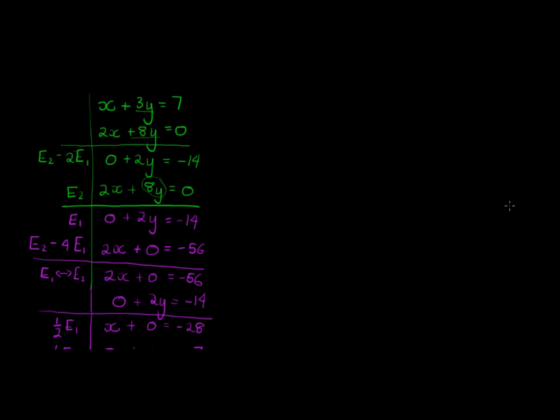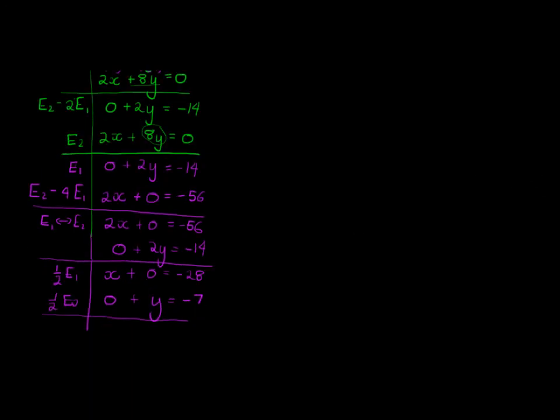Let's test it. If x is negative 28 and y is negative 7, then I get negative 28 minus, this will be 21, will give me negative 28 plus 21 is 7. 2 times negative 28 is negative 56, plus 8 times negative 7 is negative 56, which will give me 0. There we go, we found the solution to these two equations.